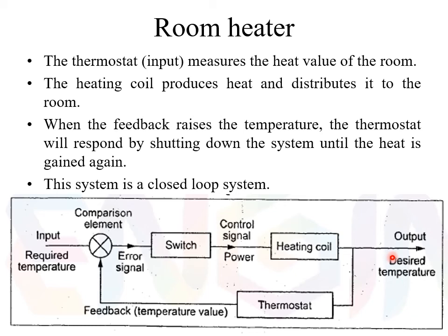When the temperature reaches 30 degrees Celsius, the thermostat senses it and gives the signal to the comparison element. At 30 degrees Celsius, both the input and the thermostat output will be the same. When they are the same, there will not be any error signal, and the switch switches off the heating coil. This is how the system operates. This is a closed loop system because the output is fed back into the input. Thank you.